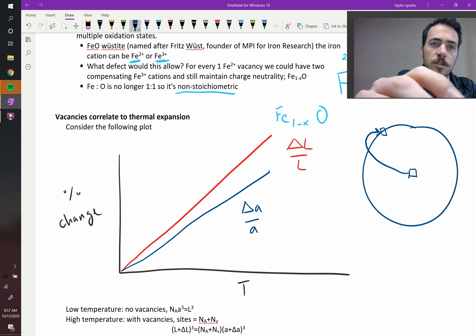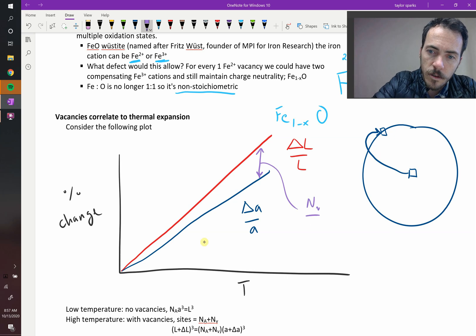So this difference between these two, the difference between those two lines at any given point, well that is equal to NV over N divided by 3. So your vacancy concentration divided by your total number of sites divided by 3 can account for that difference between those two lines.